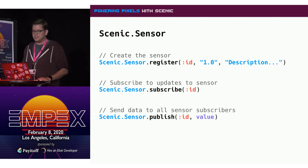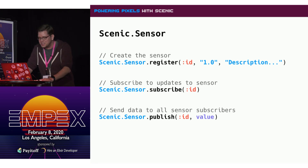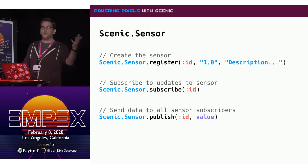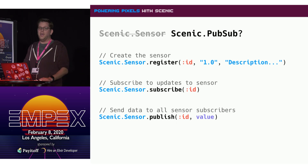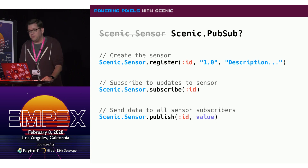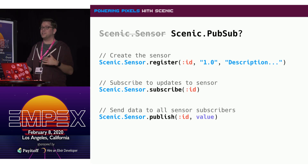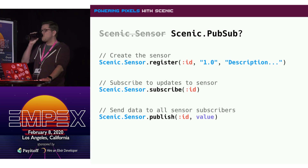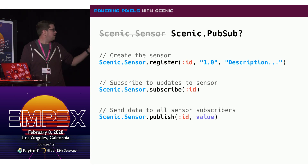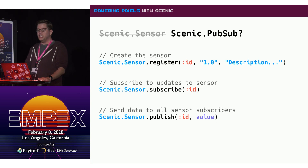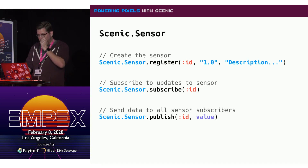The biggest problem with scenic.sensor is it has a terrible name. When I first heard it, it sounded like something for a radiation sensor or temperature sensor. But really, this is just a pub-sub — a really nice simple pub-sub that works great with Scenic. Actually, just yesterday Boyd posted in the Scenic Slack and said, hey, what do you think about renaming sensor to pub-sub? Yes, please. A lot of people, myself included, saw the name and avoided it for far too long not knowing what it does. It has three simple functions: register a new ID, subscribe to watch what happens with that ID, and publish to send data to any of the subscribers.